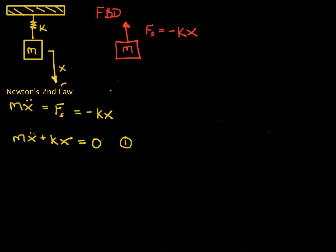I'm going to write this equation at the top because we're going to be using it again and again. M X double dot plus K X is equal to zero.